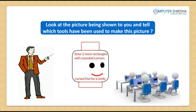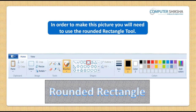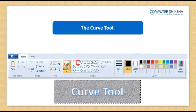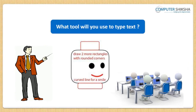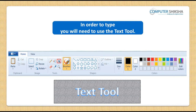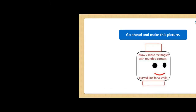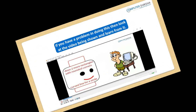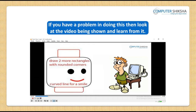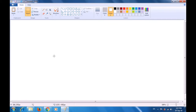Look at the picture now being shown to you and tell which tools have been used to make it. To make this picture, you will need to use the Rounded Rectangle Tool, the Curve Tool, and the Oval Tool. What tool will you use to type text? In order to type, you will need to use the Text Tool. Can you all make this picture? If you have a problem, look at the video and learn from it.